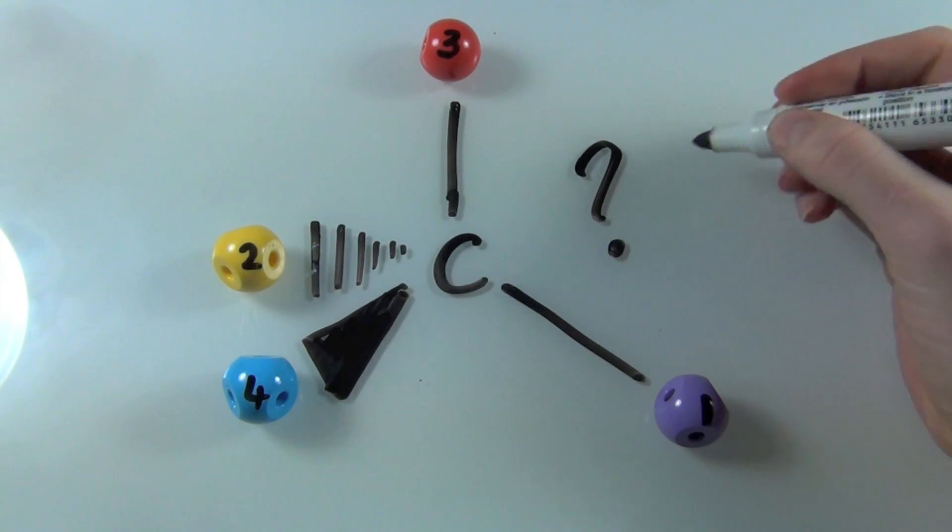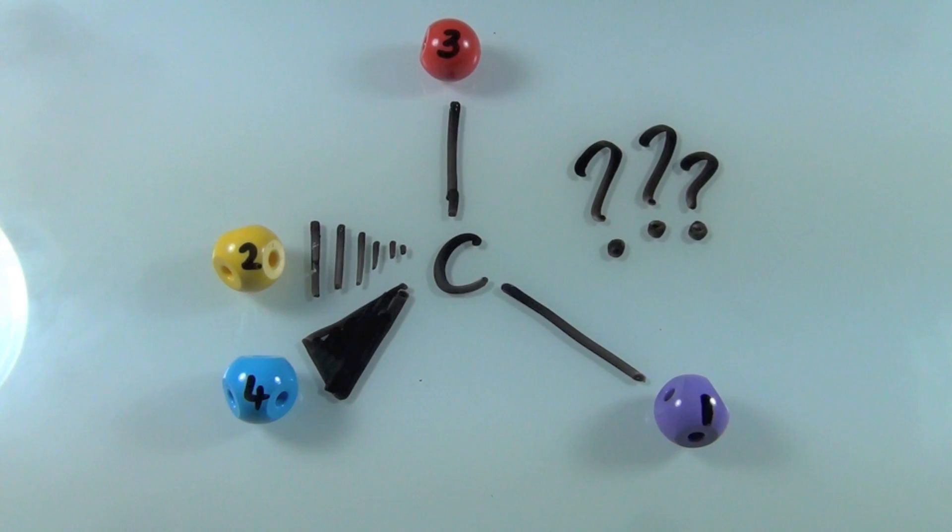The problem arises though when group four is not already in the position facing away from you. So this is where the trick comes in.